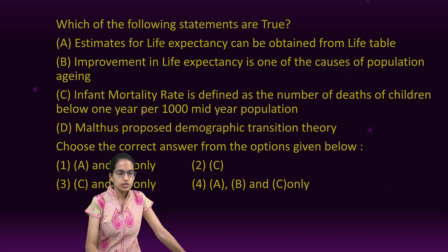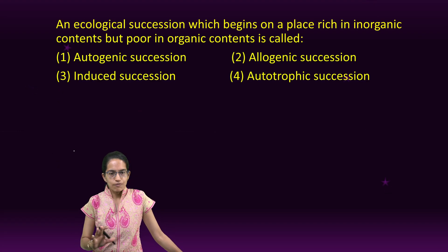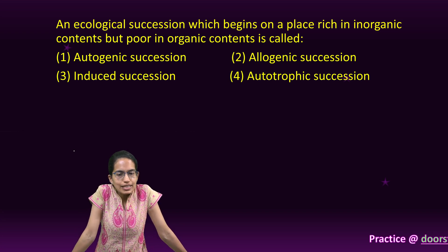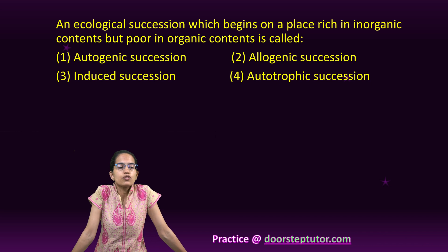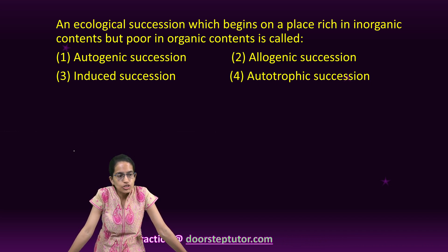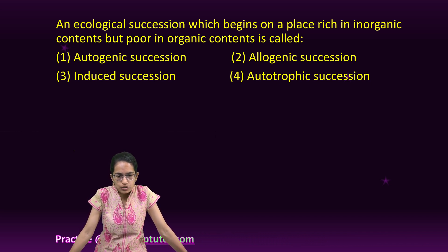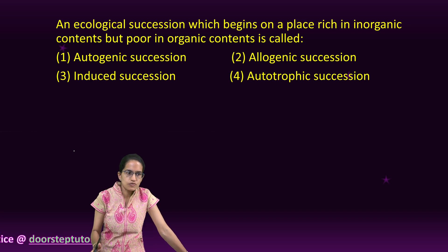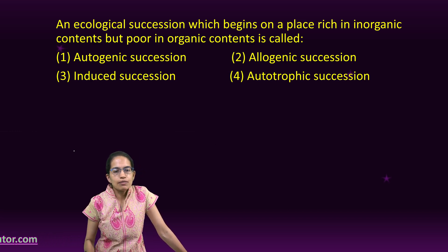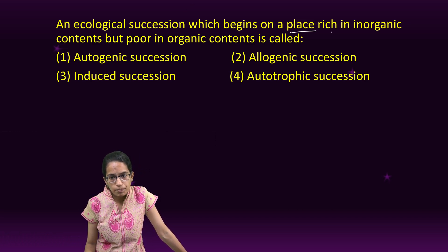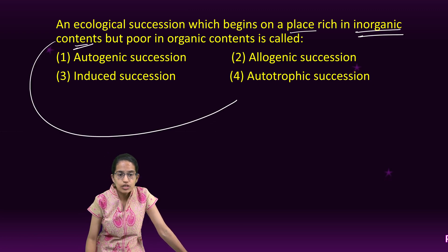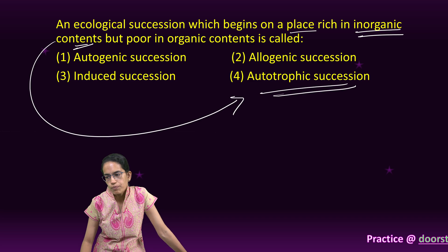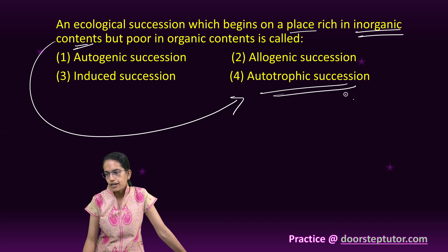The next is another important question on types of succession from ecology. We have seen what is autogenic, allogenic, induced, autotropic, heterotropic succession - these are all types of successions. When succession begins on a place which is rich in inorganic content, it is an autotropic succession, as simple as that.